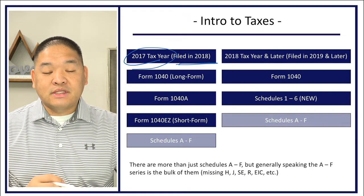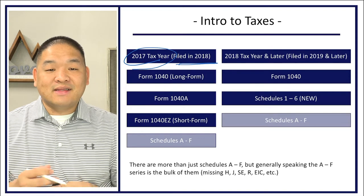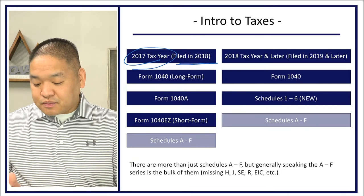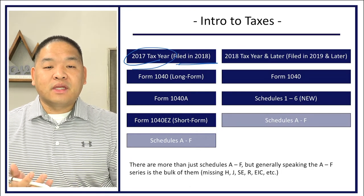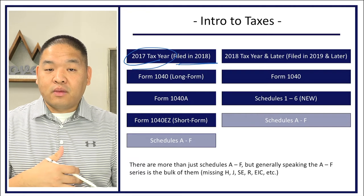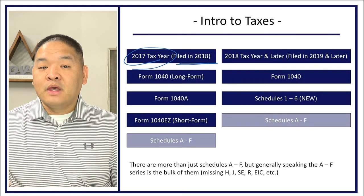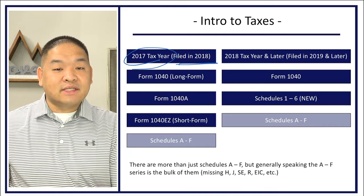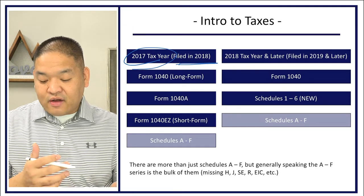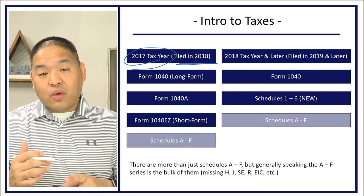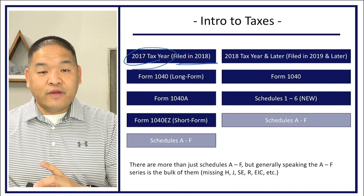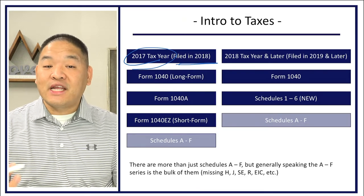Now we have one form. Some people call it the postcard form — basically it's a two-page form folded in half, like a postcard. There was a lot of useful information on the old 1040 long form from 2017, and the problem was that in order to get it down to postcard size, a whole bunch of useful lines had to be eliminated. So in order to accommodate that, the IRS found a way to create this small 1040 form but then add a whole bunch of new schedules to it.